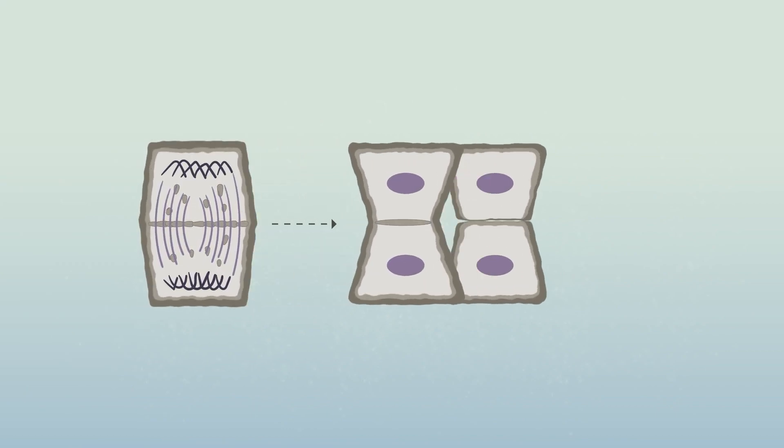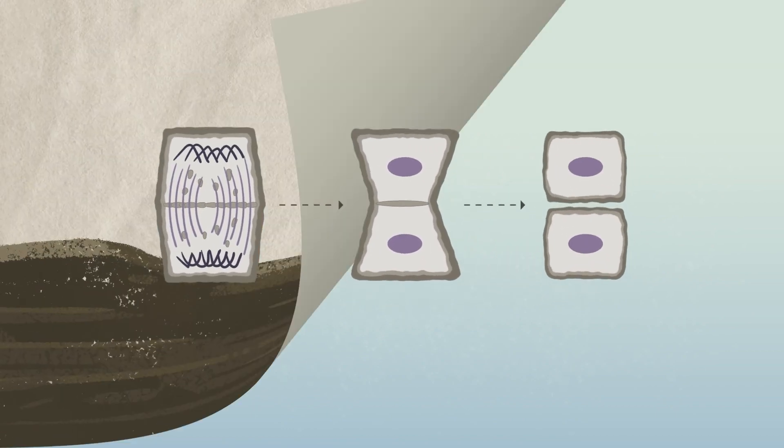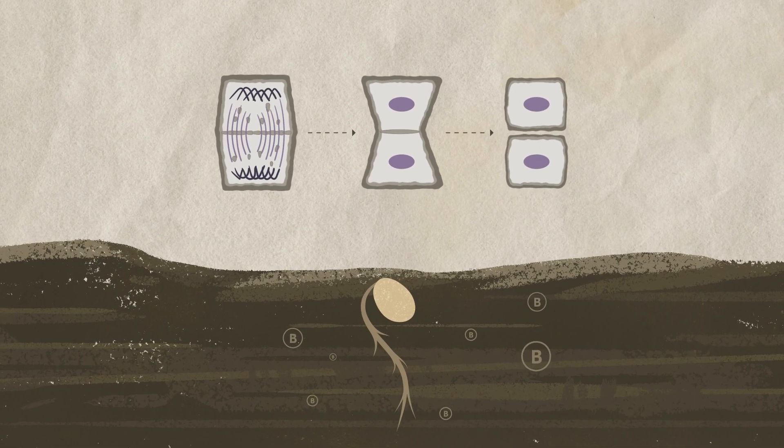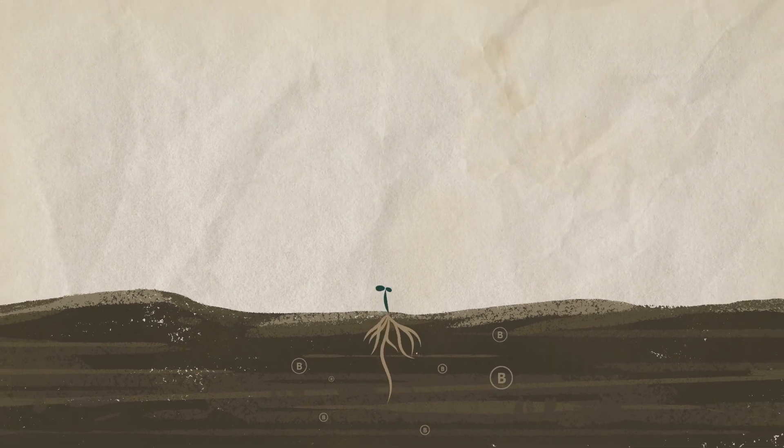After the seed starts growing, boron is needed for cell division and cell wall formation.